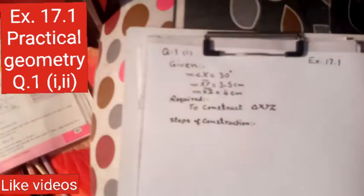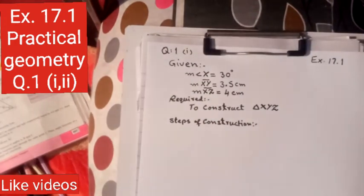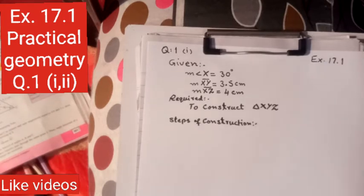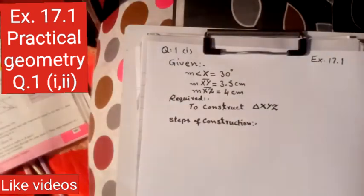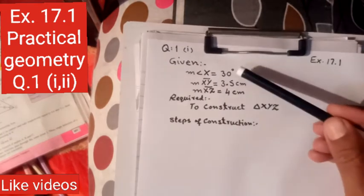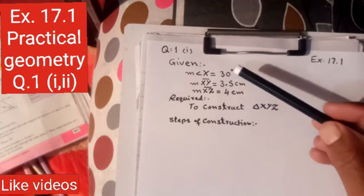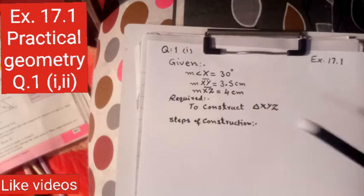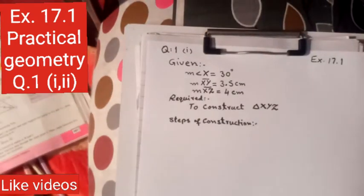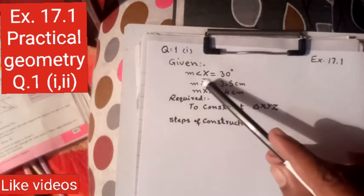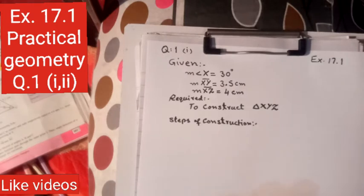We have to construct a triangle where the two sides and the included angle are given. The included angle is the main angle, and the other side is 3.5 cm.